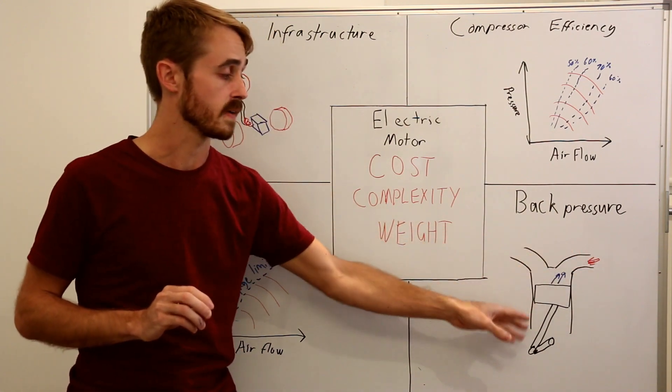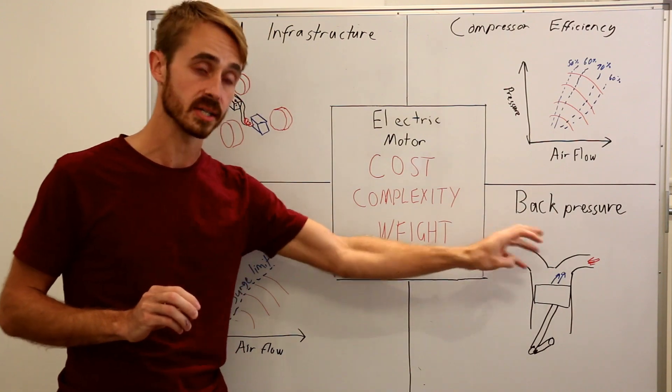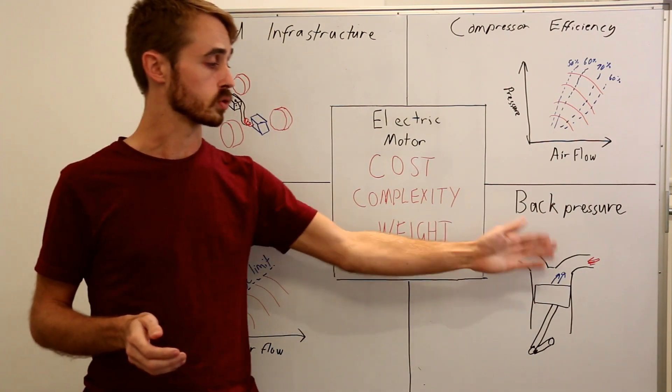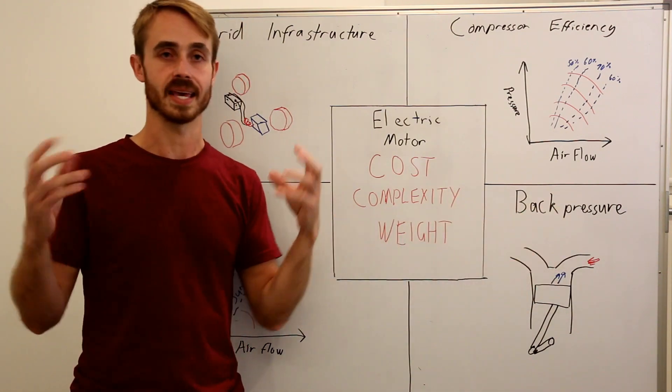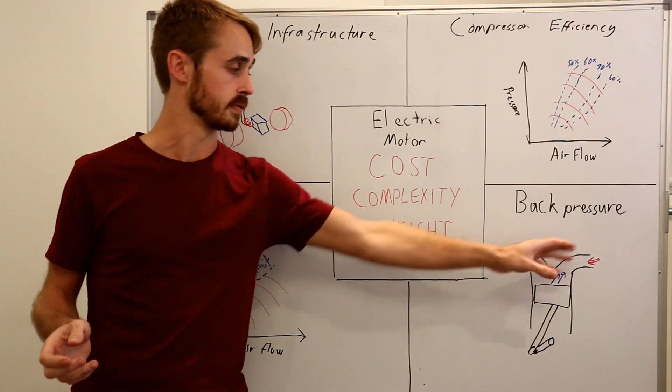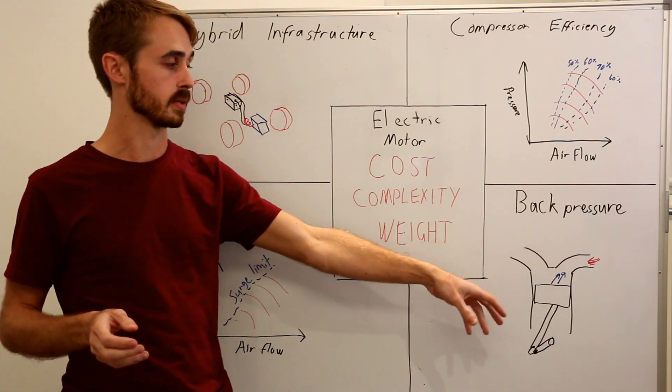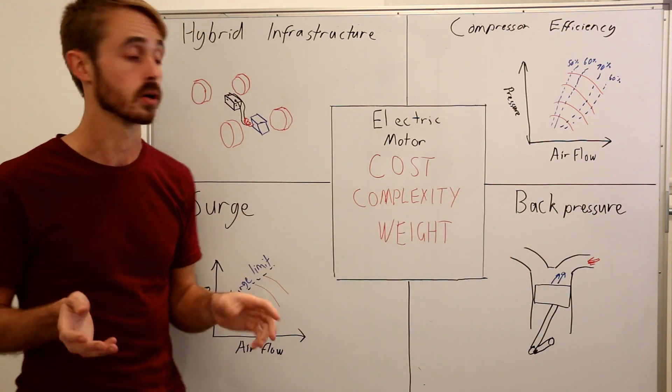This pressure will be felt at the pistons. The piston and the cylinder, the whole combustion chamber, will see an increase in back pressure. Now this will mean that on the exhaust stroke, scavenging will be reduced. So the ability to get all the exhaust gases out of the chamber will be reduced. And also you're going to increase your in-cylinder pressures for a given level of power, which will mean increased chance of knock.